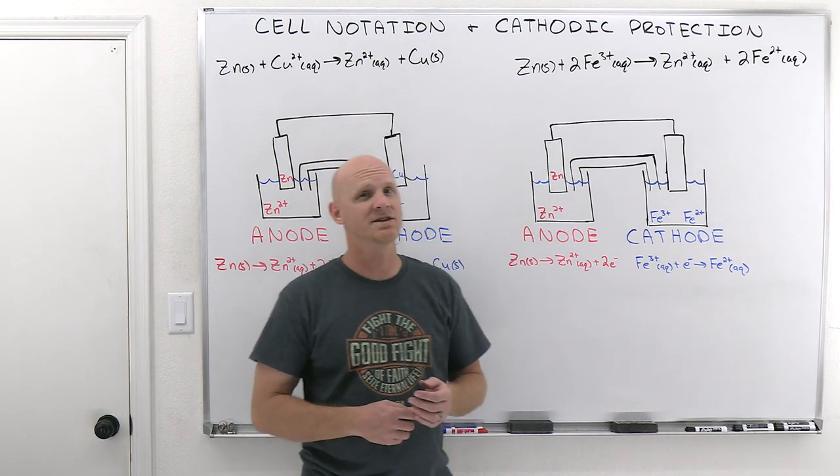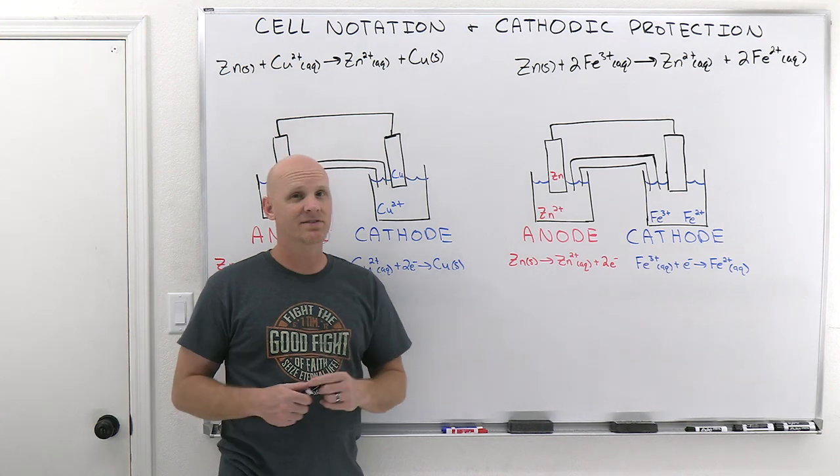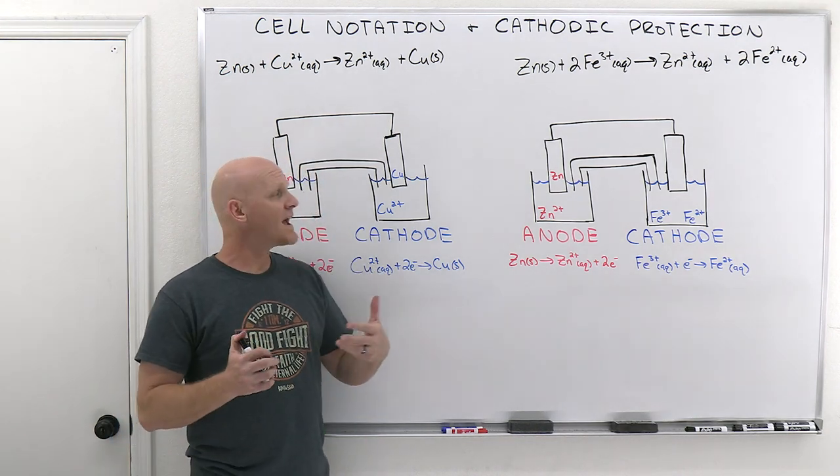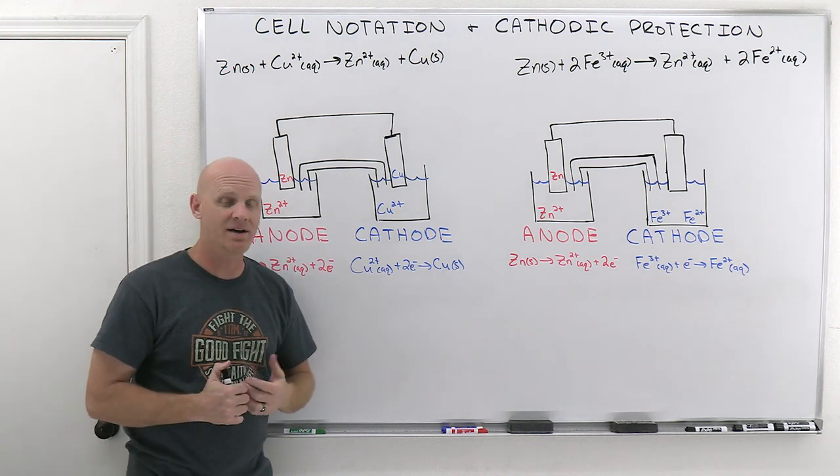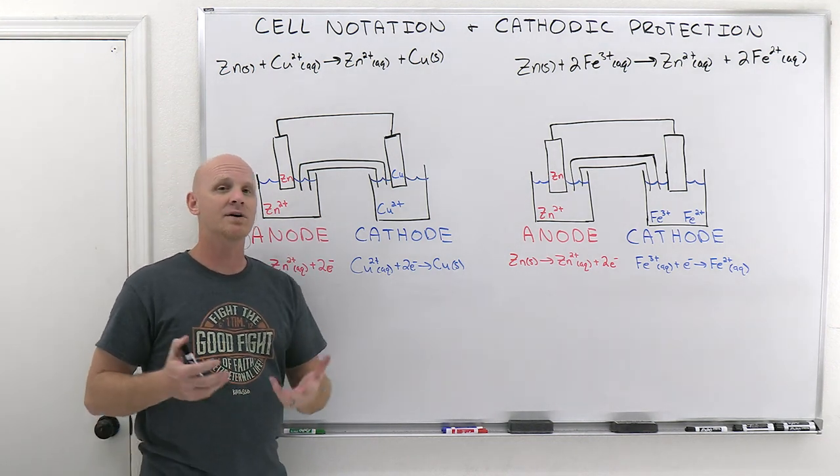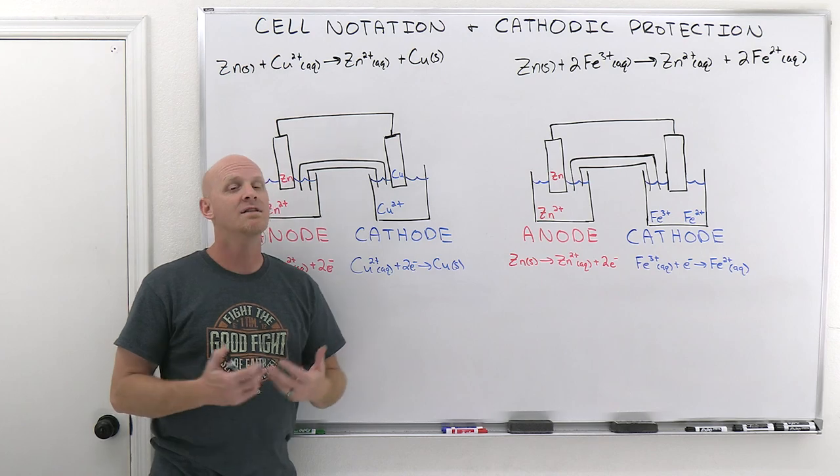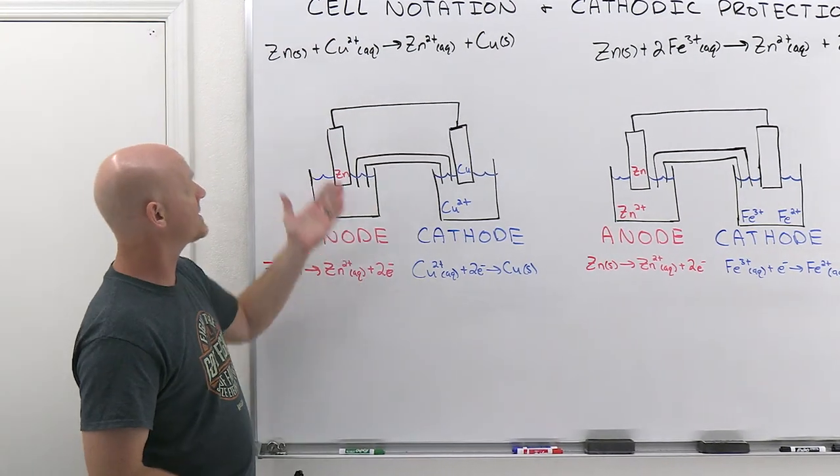We'll start with cell notation. For a typical galvanic cell, there's a special shorthand notation we use to describe these pictures, and you've got to be able to break it down and identify what's the anode, what's the cathode, things of this sort. So, go back to this one here.